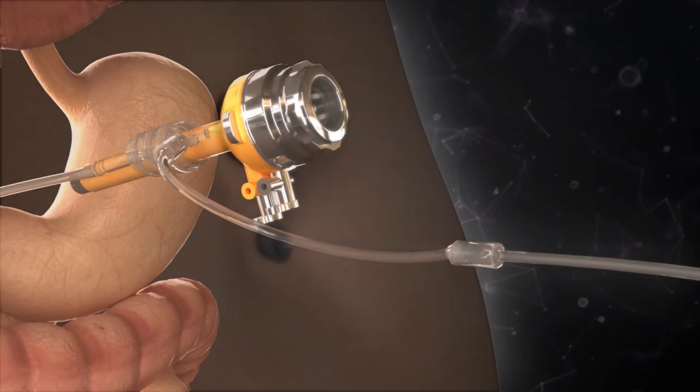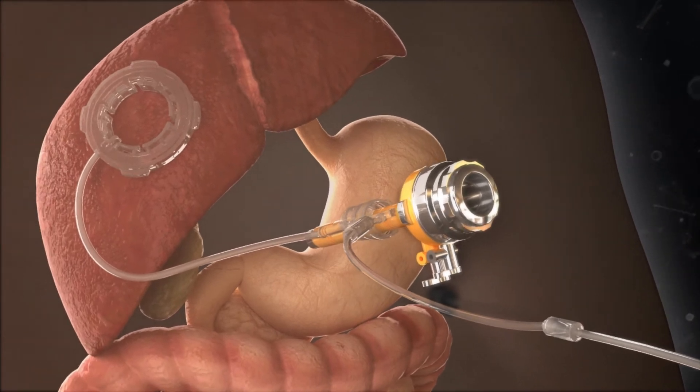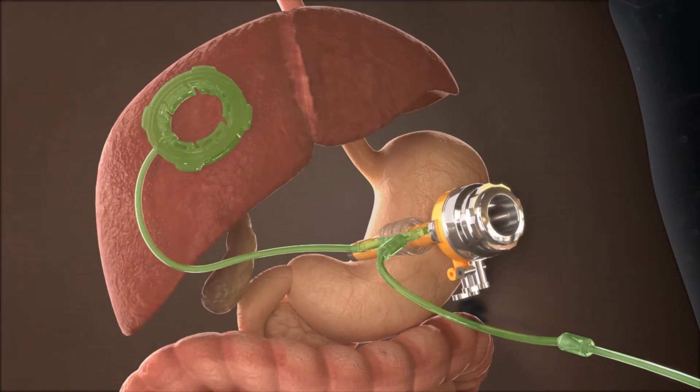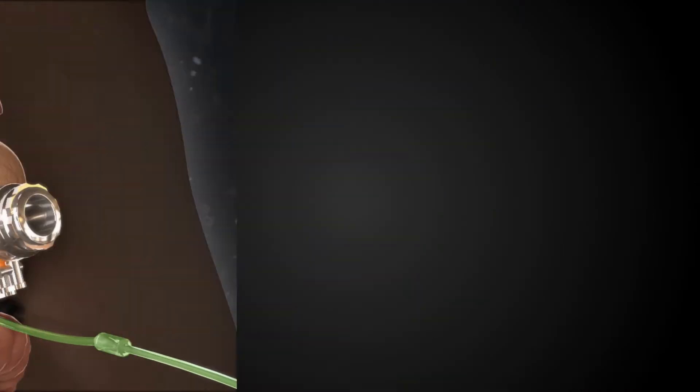The liver is lifted and suction applied, creating a vacuum seal between the surfaces of the liver and diaphragm, holding the liver in place during surgery.